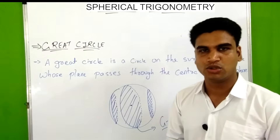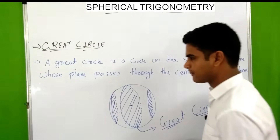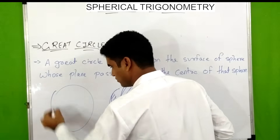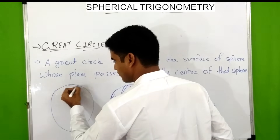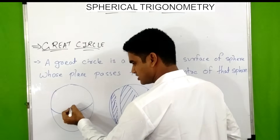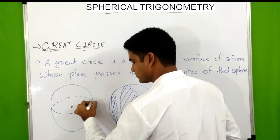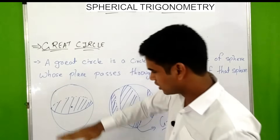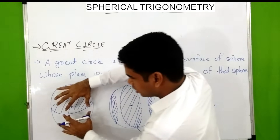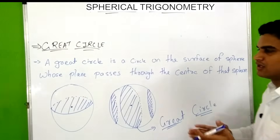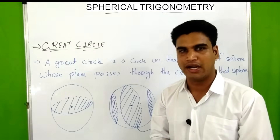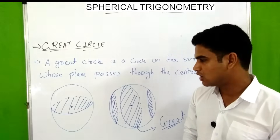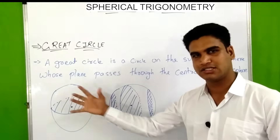Circles whose plane passes through the center of the sphere are known as great circles. The first property of great circles is that a great circle divides a sphere into two identical hemispheres. For example, if we cut the sphere along the great circle, we get two identical hemispheres. The second property is that the radius of the great circle is equal to the radius of the sphere, because the circumference of the great circle equals the circumference of the sphere.